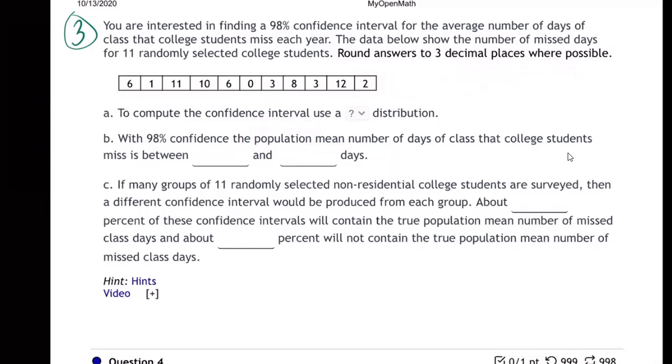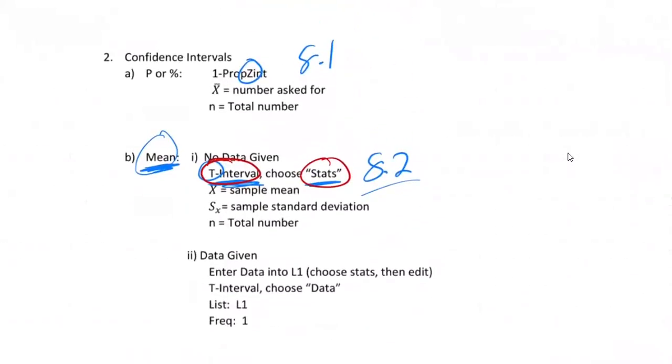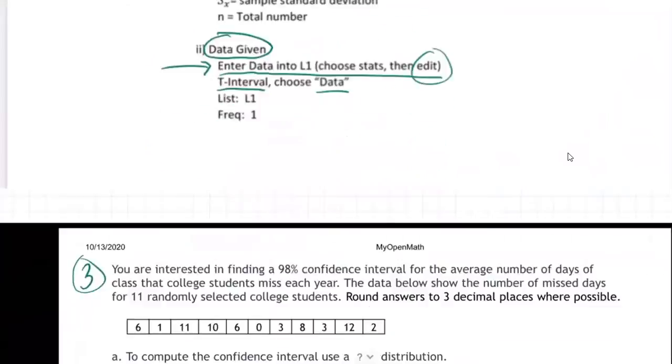What they call the population mean for the whole population, for all the college students, not just for the sample. This is a sample—just 11 people. But we want to use that to become 98% confident of the population mean, the average for the whole population. All right, how do we do it? Well, we're going to go to our calculator. This time we're going to use something a little different because we have data.